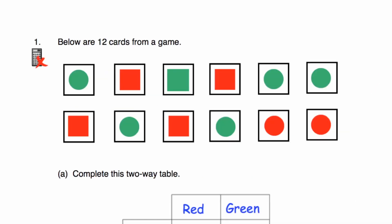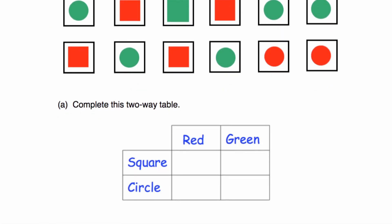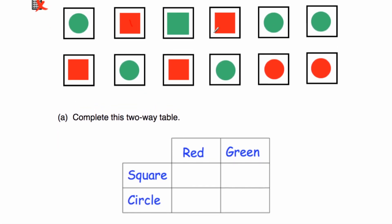Let's have a look at question number one. Question one says: below are 12 cards from a game. So we've got a green circle, a red square, a green square, a red square, a green circle, a green circle, a red square, a green circle, a red square, a green circle, a red circle, and a red circle. Part A says complete this two-way table. In terms of the red squares, we've got four red squares.